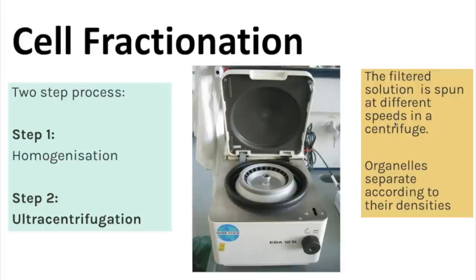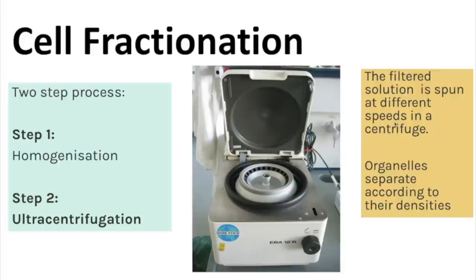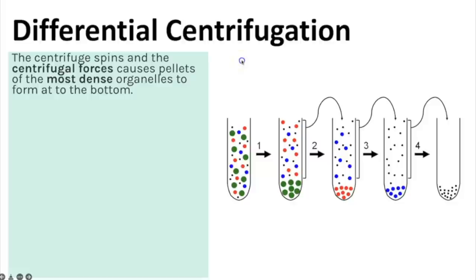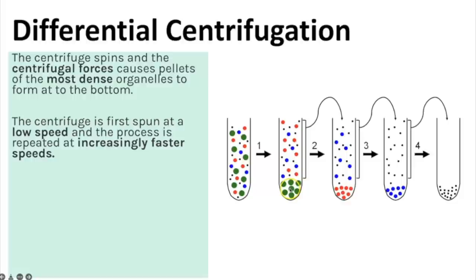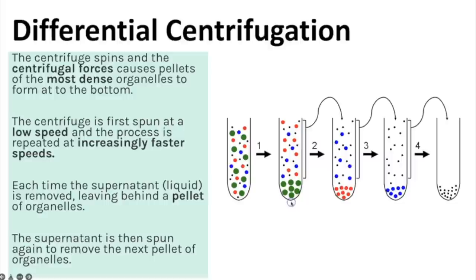The sample is placed in a centrifuge and spun at different speeds. Organelles separate according to their densities — this is differential centrifugation. Centrifugal forces cause the densest organelles to form a pellet at the bottom first. The pellet is removed and the remaining supernatant is spun again at a faster speed to collect the next most dense organelles. This process is repeated at increasingly faster speeds, with each pellet containing the organelles of that density.